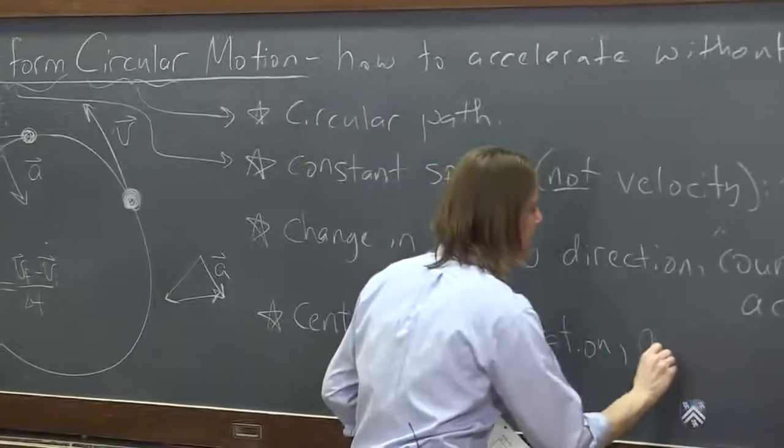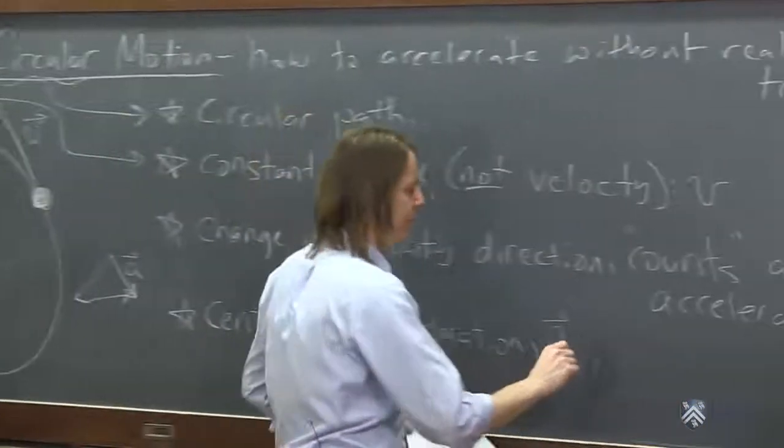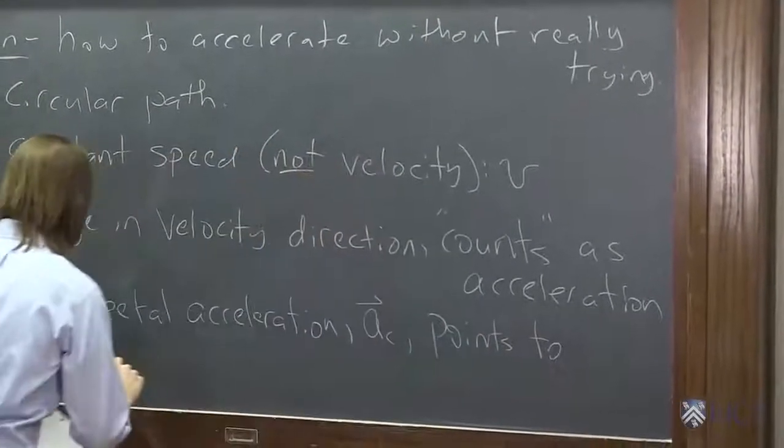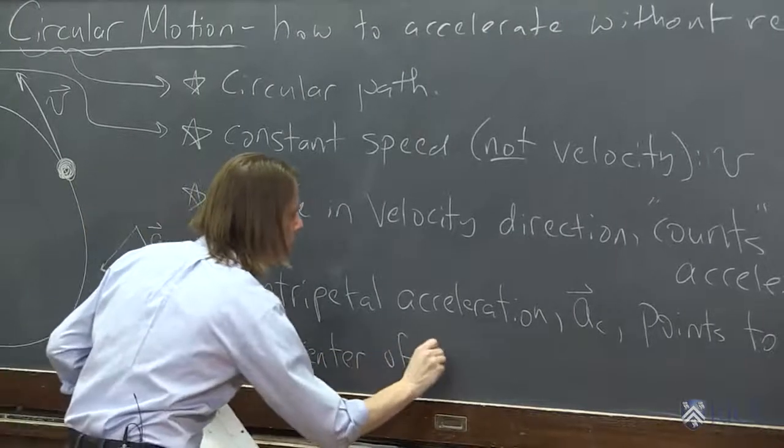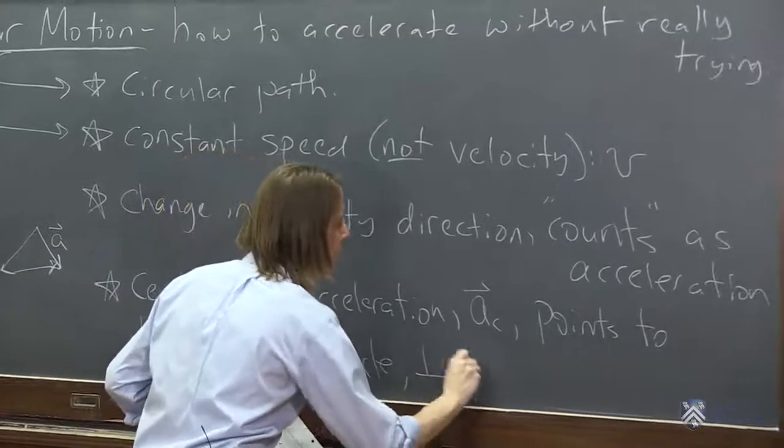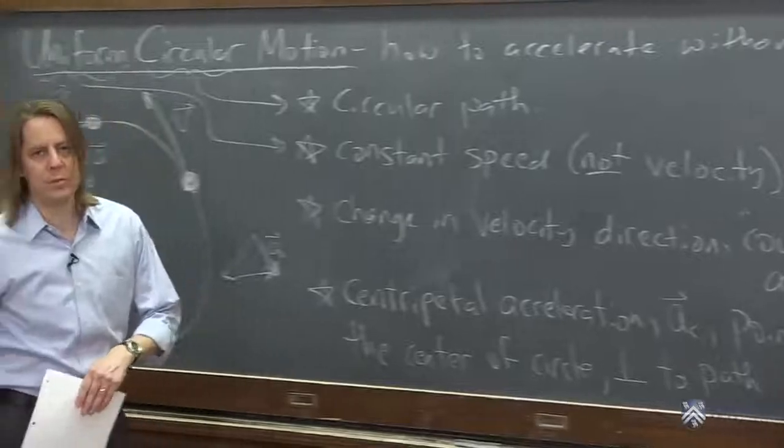So the centripetal acceleration, it's usually a with a little c subscript. And it points to the center of the circle. And also, another way to think of it is that it is perpendicular to the path. That's another version of it we will talk about.